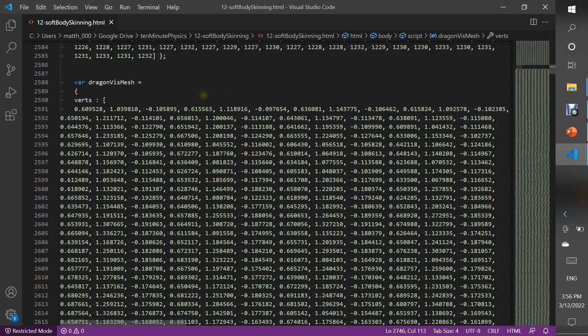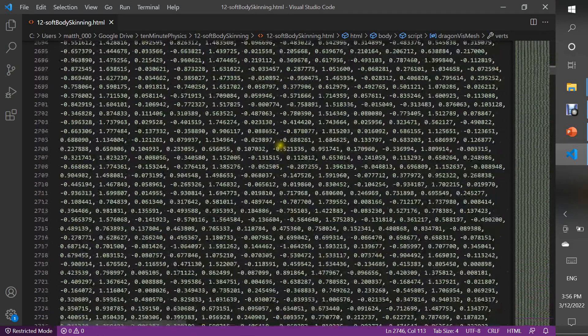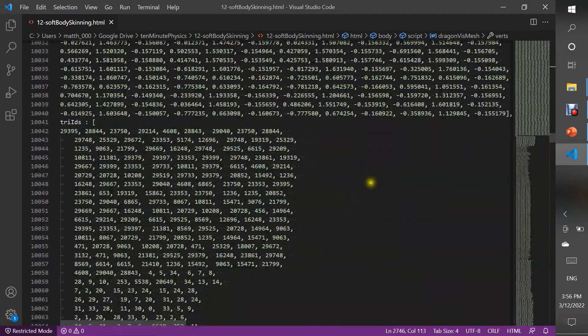Here is the definition of the visual mesh. First, we have the vertices. And finally, the indices of the triangles.